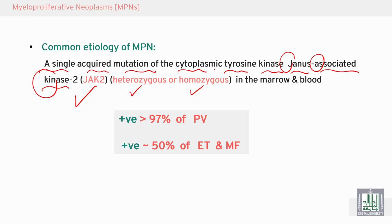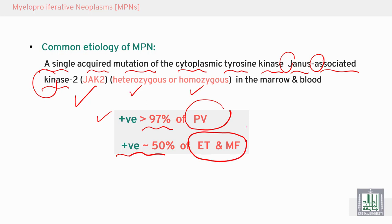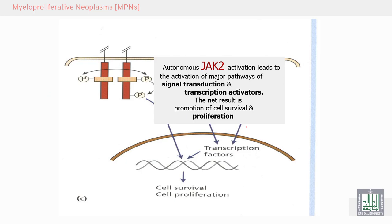This mutation is positive in 97% of polycythemia vera and positive in 50% of essential thrombocythemia and myelofibrosis. This autonomous JAK2 mutation causes autonomous activation without growth factors, leading to activation of major pathways — signal transduction and transcription activation — with the net result being promotion of cell survival and proliferation.